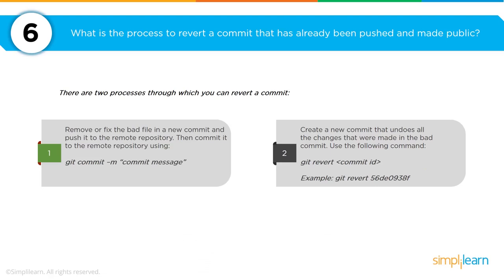A question around commits is: what is the process to revert a commit that has already been pushed and made public? There are two ways. First, address the bad file in a new commit using: git commit -m with a comment explaining the change. Second, create a new commit that undoes all the changes from the bad commit using: git revert followed by the commit ID, such as 56de0938f. That would allow you to revert any bad files you submitted.